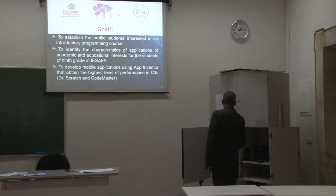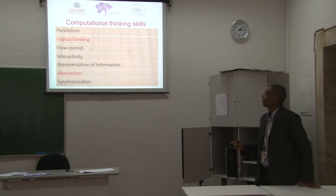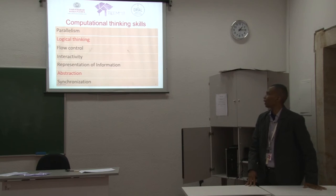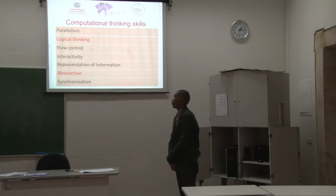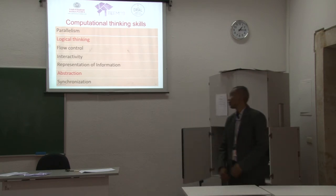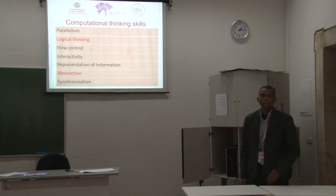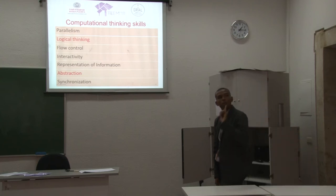There are also two options within the computing center. You can see the computational thinking components: parallelization, logical thinking, flow control, interactivity, representation of information, abstraction, and synchronization. Logical thinking and abstraction are the areas with the worst evolution observed using both Dr. Scratch and Code Master.